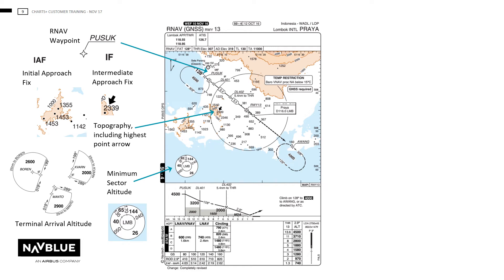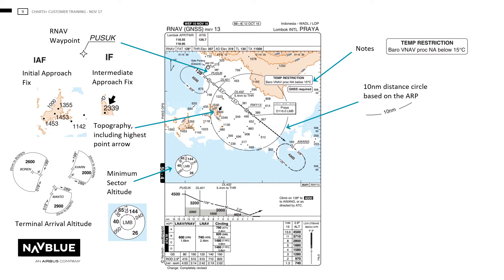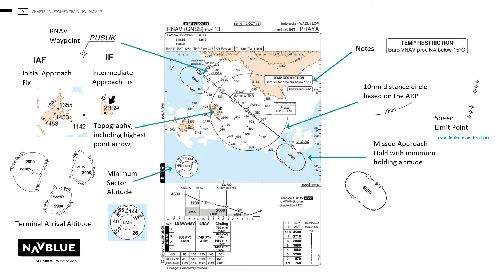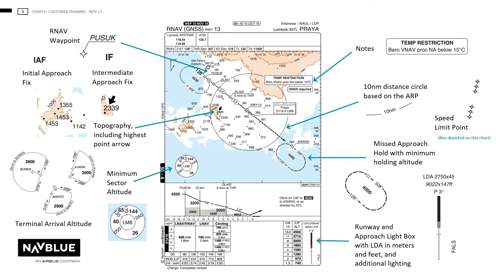The TAA will replace the minimum sector altitude if both are published. Any notes to be published. The distance circle, normally centred on the ARP, radius will normally be 10 nautical miles. Depending on the scale, a radius of 20 nautical miles can be used. Speed limit points to be shown on RNAV charts only. The missed approach hold with a minimum holding altitude will be a solid dashed line. The runway and approach lighting box will give you the LDA in metres and feet and the approach lighting with the approach aid such as PAPIs or VASIs, as shown here with PAPIs at 3 degrees.